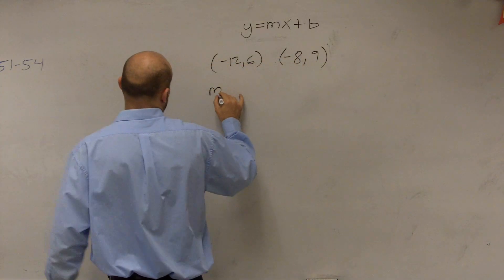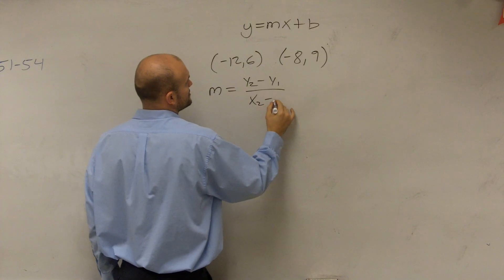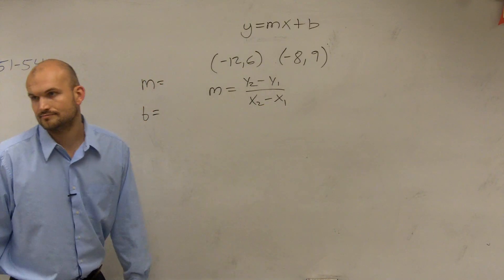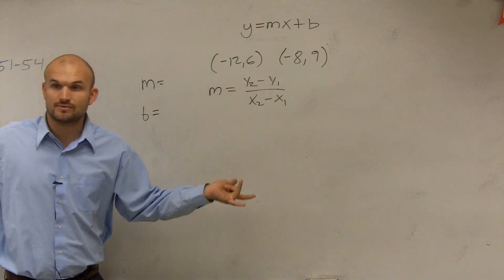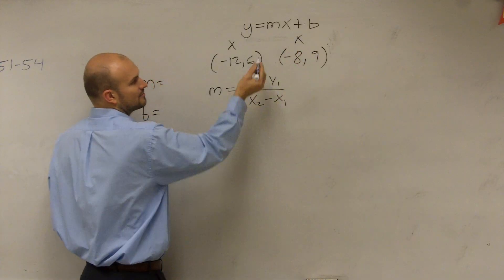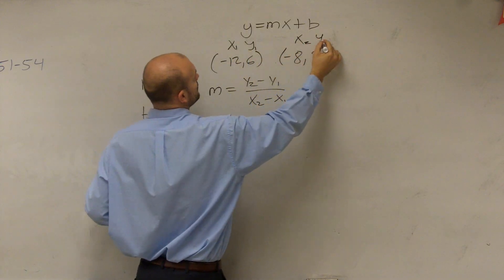Well, we have to go back to our slope formula, which is y2 minus y1 over x2 minus x1, right? So then we label these. Which one's x1, which one's x2? It doesn't matter. Pick one to be 1, pick the other to be 2.